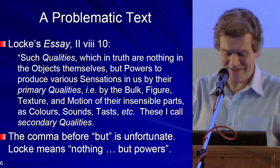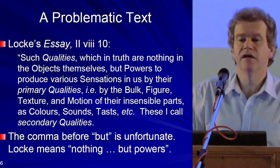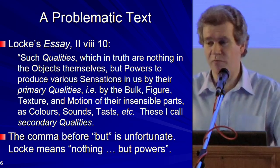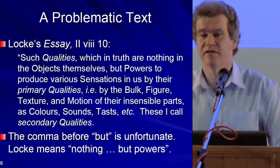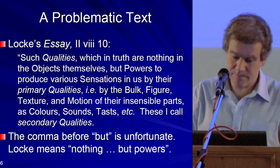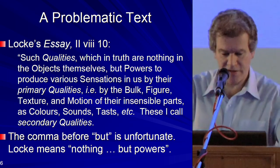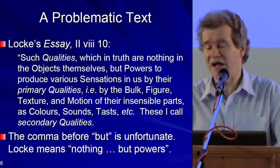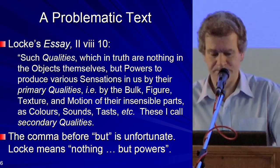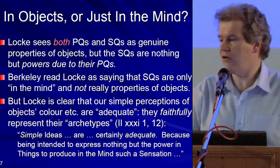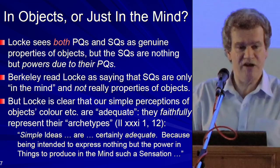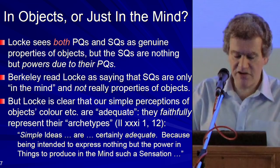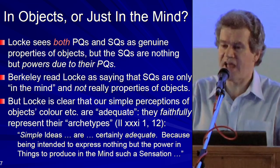That comma before 'but' is rather unfortunate. It gives the impression that Locke is saying secondary qualities are nothing in the objects themselves — quite different from saying they are nothing but powers. They are in the objects, but they are powers. Some people have interpreted Locke one way, some the other. I think it's quite clear that Locke does think secondary qualities are in objects. Berkeley read Locke as denying that secondary qualities are in objects, thinking Locke was saying they are just in the mind.